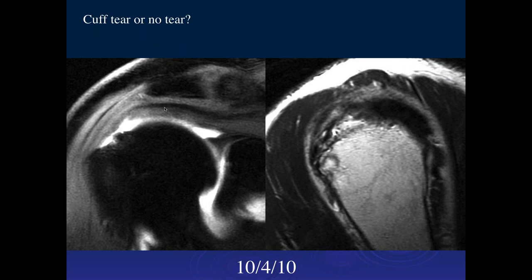Looking at more views from the same date — it looks very similar. Now notice that the musculotendinous junction is proximally retracted to the glenoid, and this distance is about two centimeters. So if you look at this, it appears there is proximal retraction. How could you get retraction if it's just a partial tear?